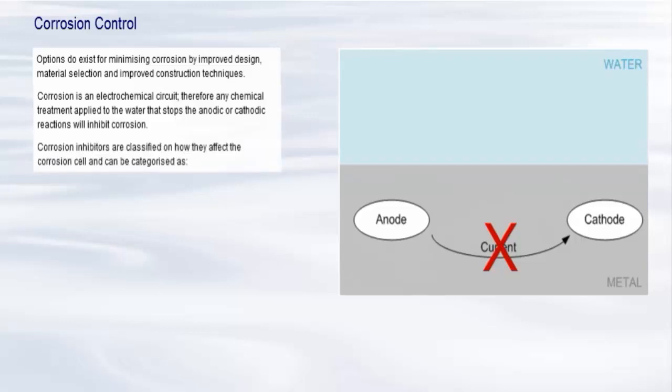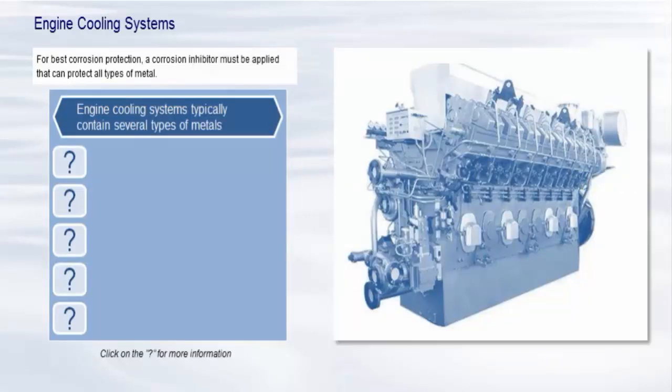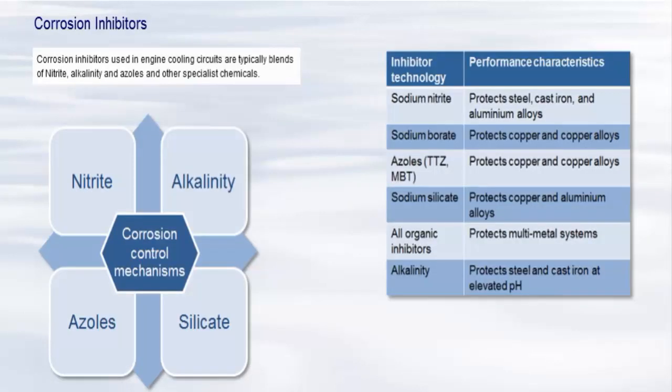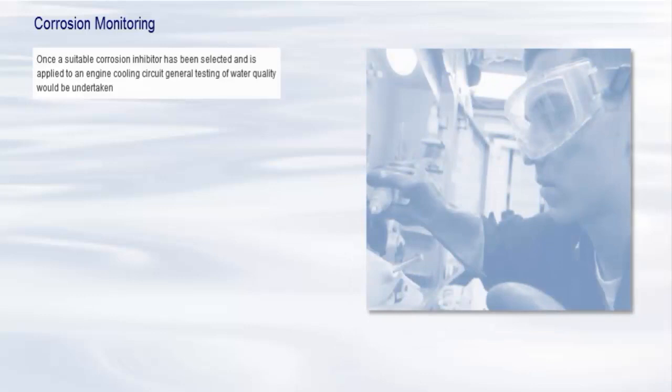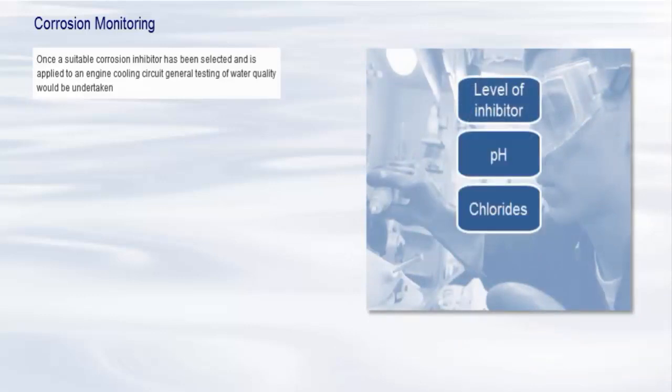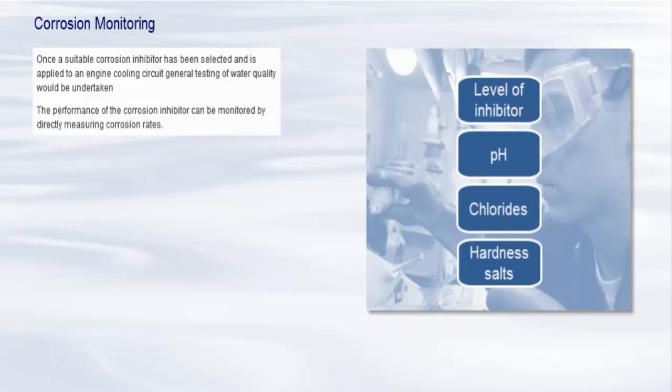Corrosion inhibitors are classified on how they affect the corrosion cell and can be categorised as anodic inhibitors, cathodic inhibitors, or combination inhibitors. Engine cooling systems typically contain several types of metals. For best corrosion protection, a corrosion inhibitor must be applied that can protect all types of metal. Corrosion inhibitors used in engine cooling circuits are typically blends of nitrite, alkalinity, and azoles and other specialist chemicals. Once a suitable corrosion inhibitor has been selected and is applied to an engine cooling circuit, general testing of water quality would be undertaken to measure the levels of inhibitor, pH, and chlorides as a check for contamination and hardness salts. The performance of the corrosion inhibitor can be monitored by directly measuring corrosion rates.